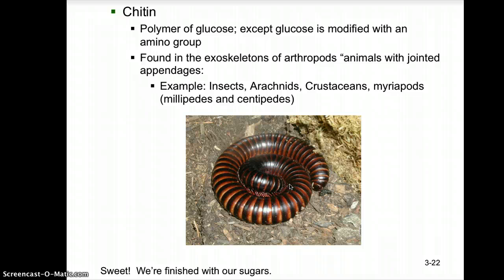The last polysaccharide to be aware of is chitin. It is a polymer of glucose modified with an amino group (NH₂). It is found in the exoskeleton of arthropods — animals with jointed appendages, such as insects, arachnids, crustaceans, and myriapods including millipedes and centipedes. That concludes our carbohydrate lecture. We'll do activities with molecular models in class, and our next lecture will focus on fats, lipids, and proteins.